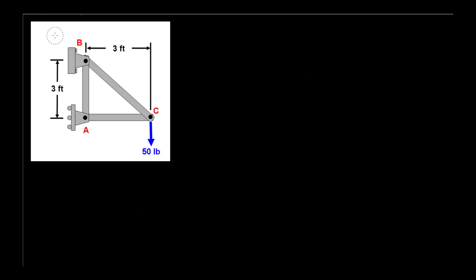Welcome back to Westwood Engineering. This is for Principles of Engineering, Problem 2.17, and we're going through number four here. What you'll see on the screen is the problem itself: you're given a triangular truss suspended off a wall. You've got joint B with a pin and joint A with a roller. The first thing we want to do is solve for the angles.